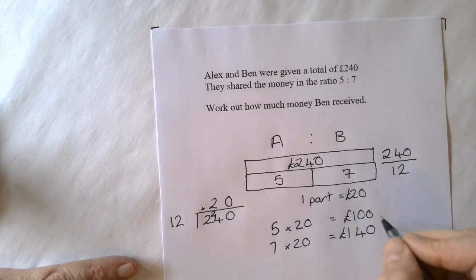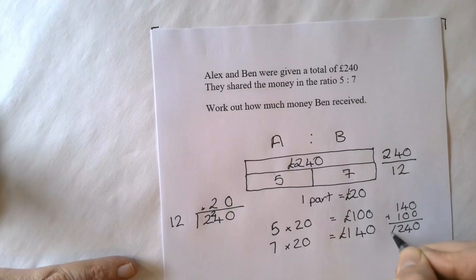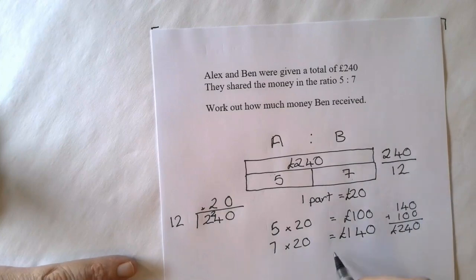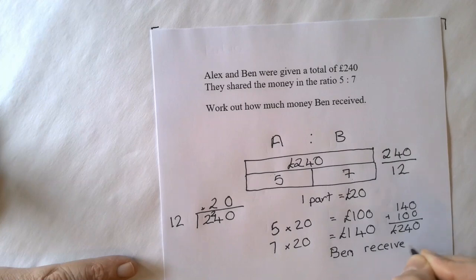These two should add up to the amount of money you get to that thing. So if we add those both up, £140 plus 100 equals 240. So to answer the question, Ben received £140.